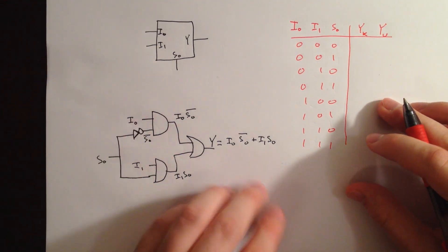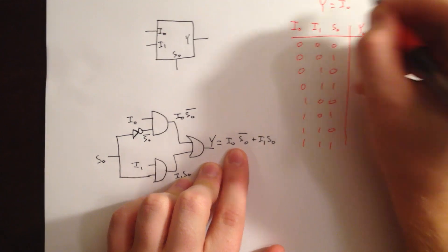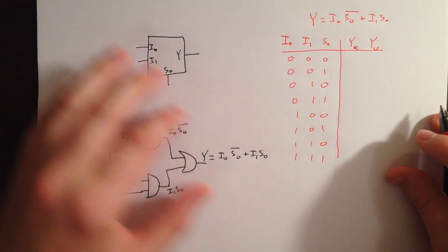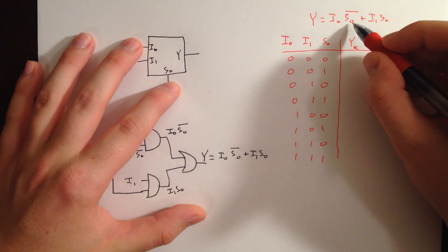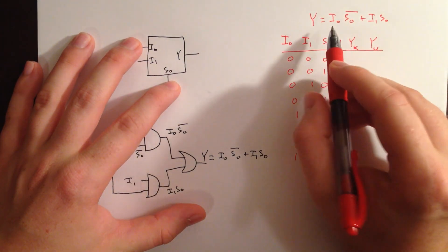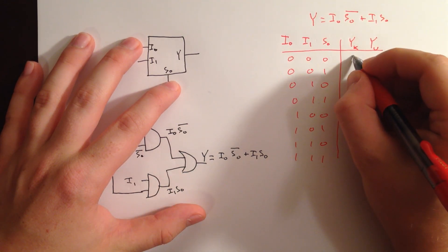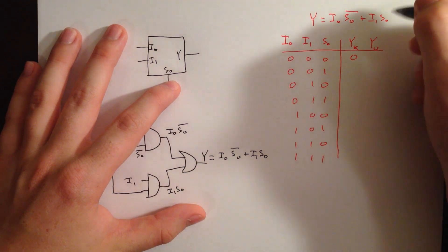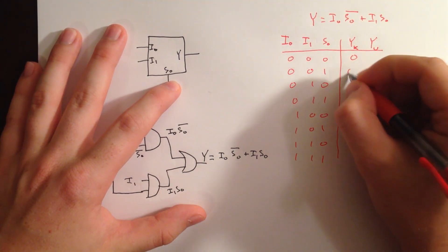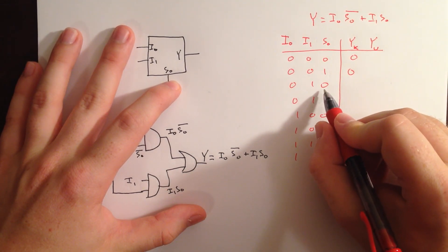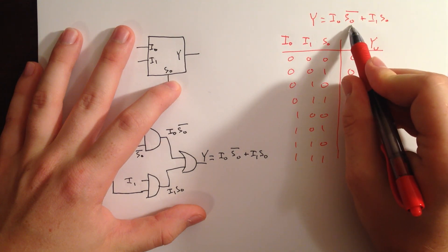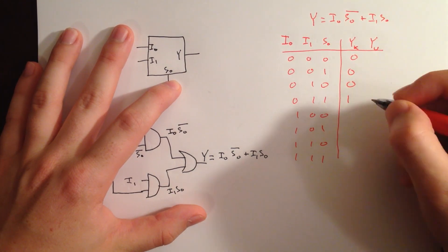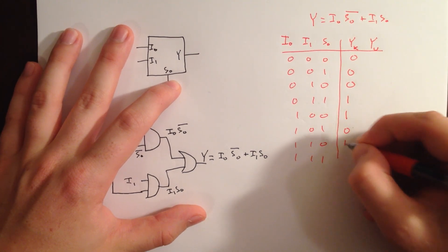Let me rewrite this equation right here. So if S0 is 0, then S0 NOT is going to be 1, and then our I0 is 0, so our Y known we'll call it 0. And then S0 NOT will be 1 and our I1 will be 0, so this will also be 0. And then S0 NOT is 0, so that means this is going to be 1 — and our I0 is also 0. And then our S0 is 1, I1 is 1, so we'll have 1 here. And we just keep doing the same thing and we should get something that looks like that.